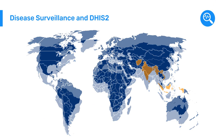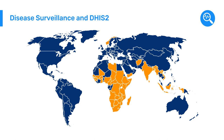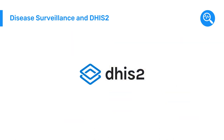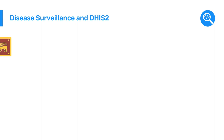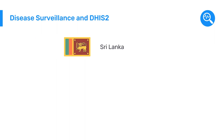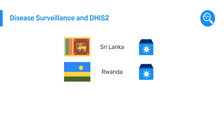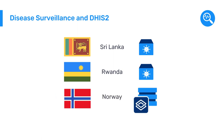To address this urgent need, countries in Asia, Africa, the Middle East, Europe, and the Americas turned to DHIS-2. In many of these countries, such as Sri Lanka and Rwanda, COVID-19 modules were quickly added to existing national DHIS-2 systems, while some others, such as Norway, deployed DHIS-2 for the first time in response to this pandemic.